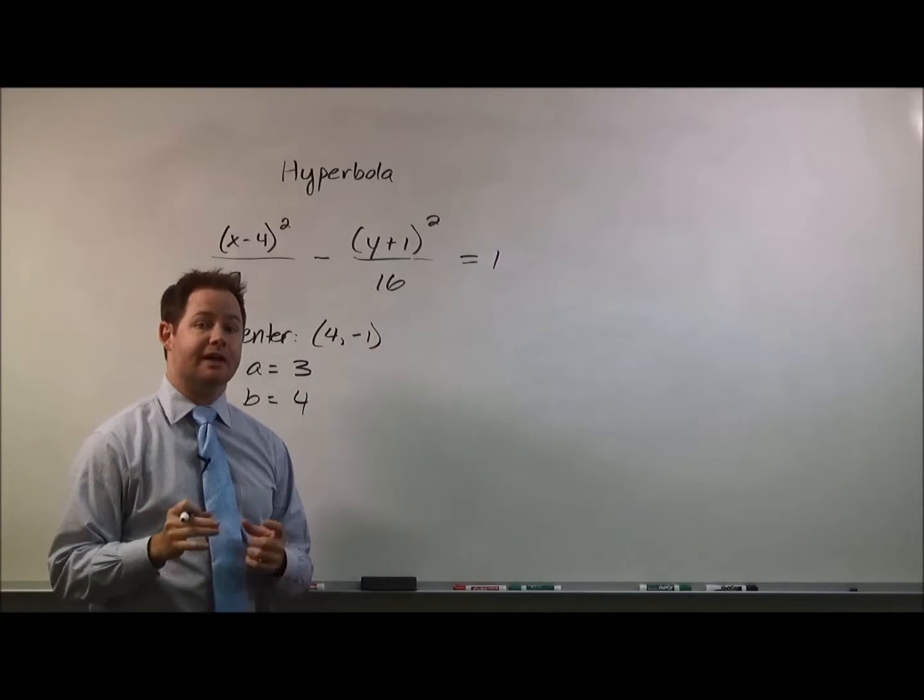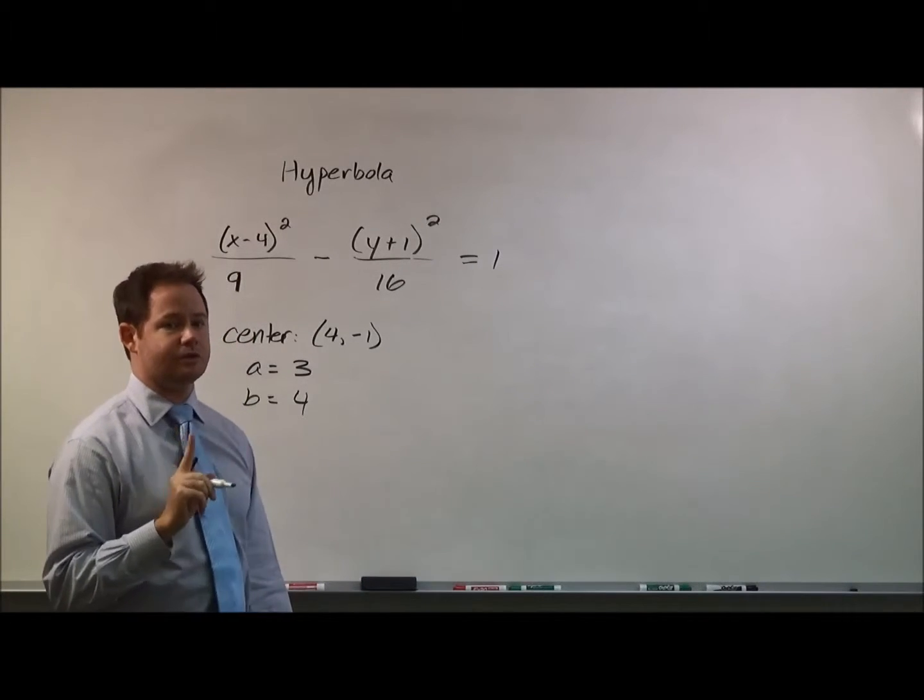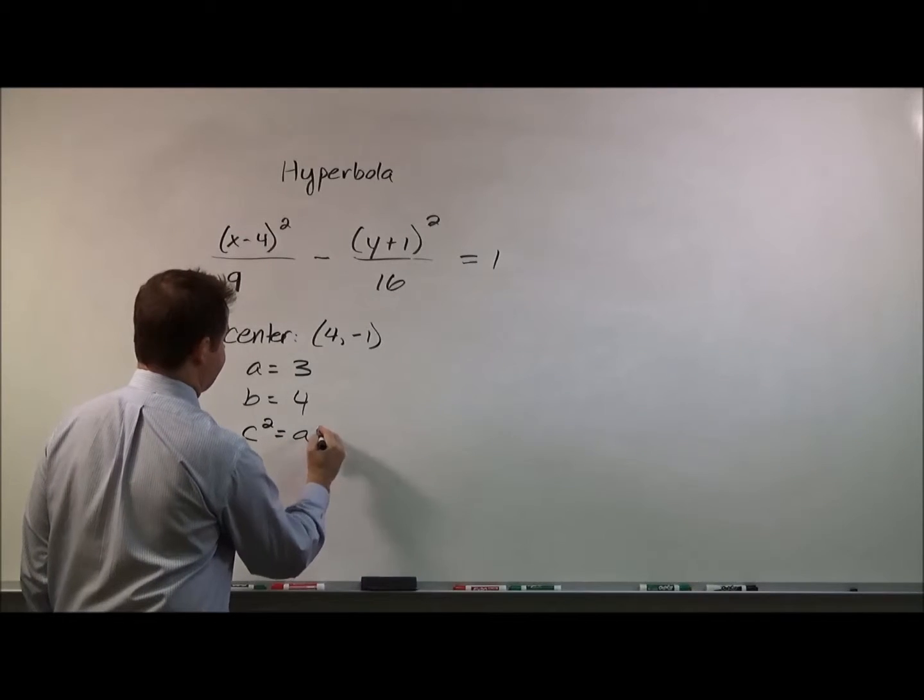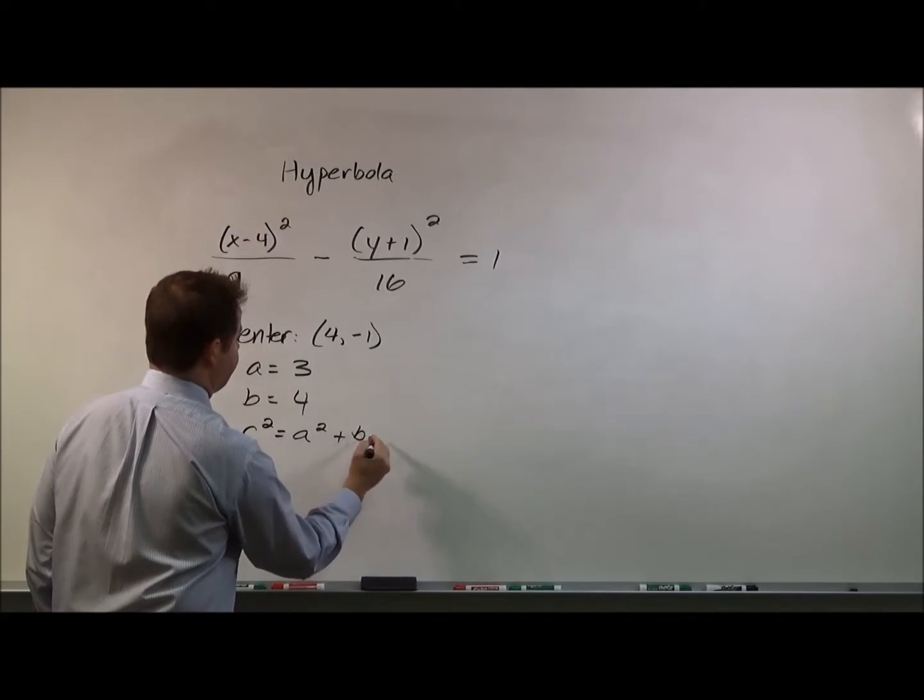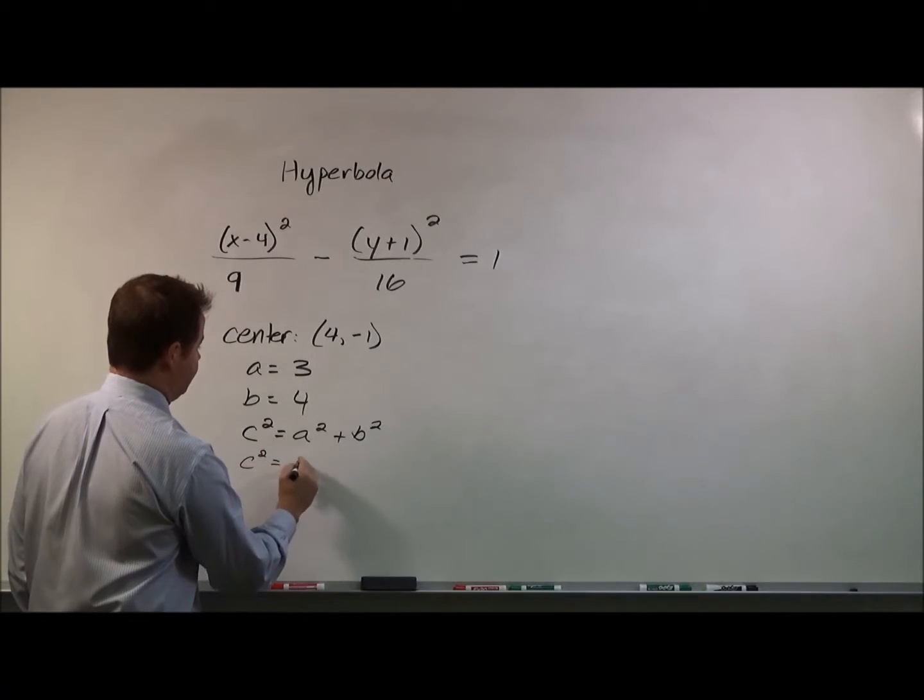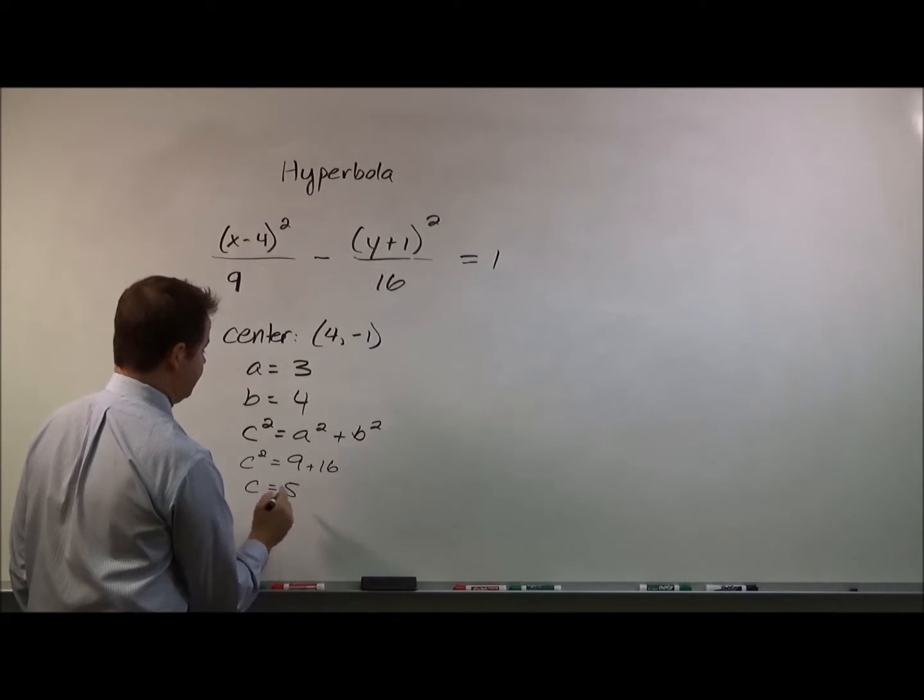And then if you need to find c, for example, if you're asked to find the foci, that equation is also going to be a little bit different from an ellipse. It's going to look a little bit more like Pythagorean theorem. C squared will equal a squared plus b squared. And when you solve that for this, you'll get nine plus sixteen, and you'll get c equals five.